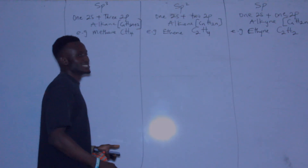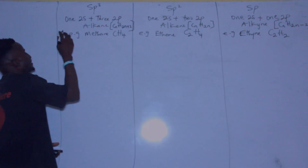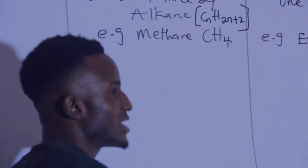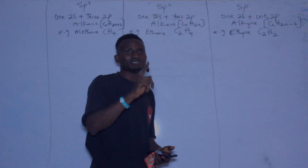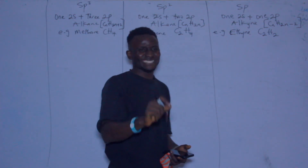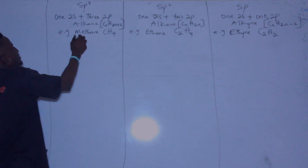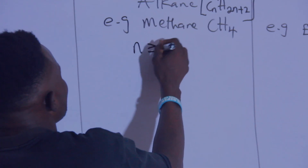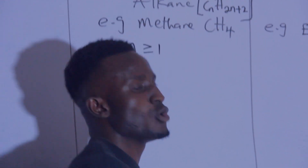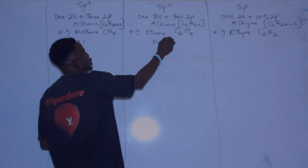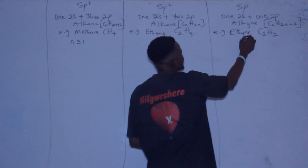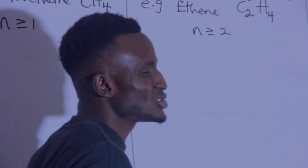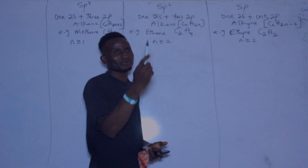The reason why the first member of sp³ is methane is because for alkane, n is greater than or equal to 1, so it starts from number 1. For alkene and alkyne, n is greater than or equal to 2, so they do not have methane as a member. They do not start from methane.